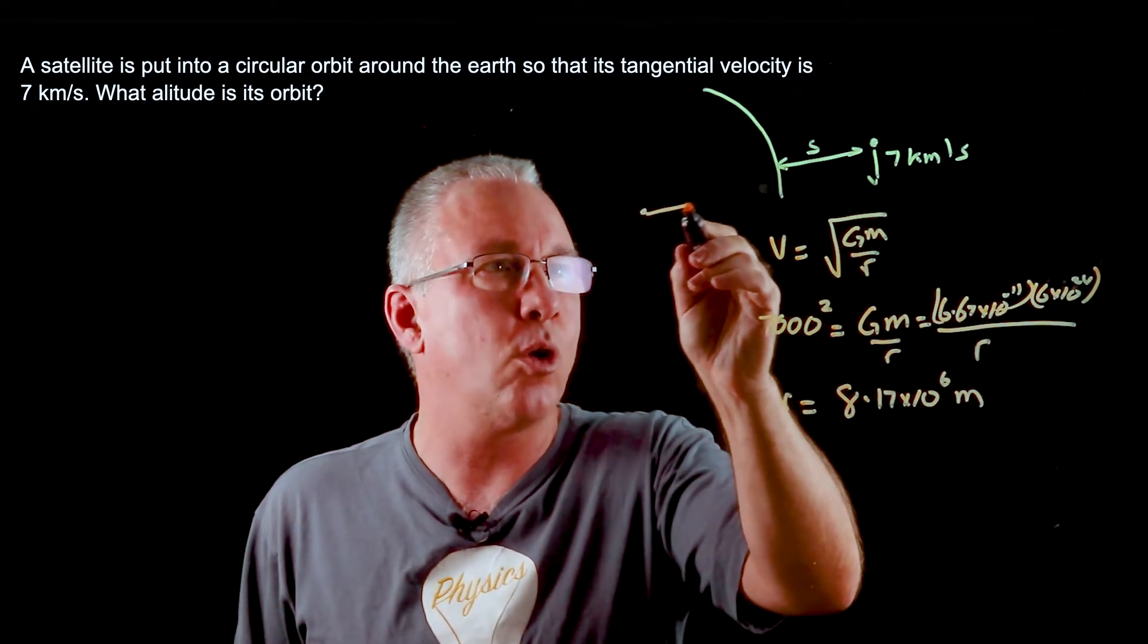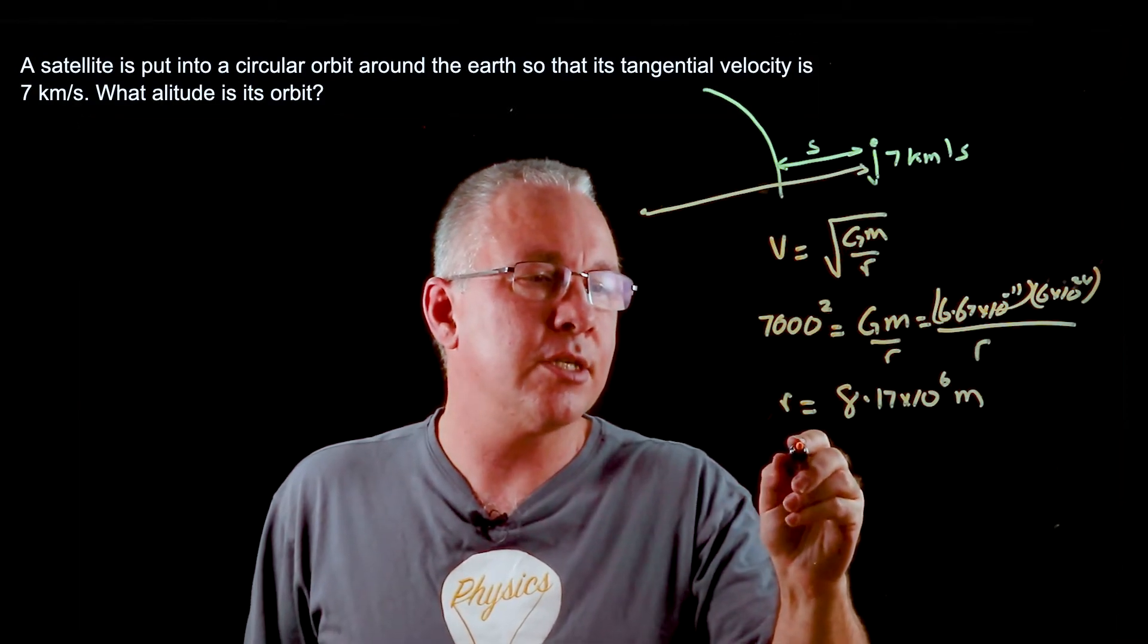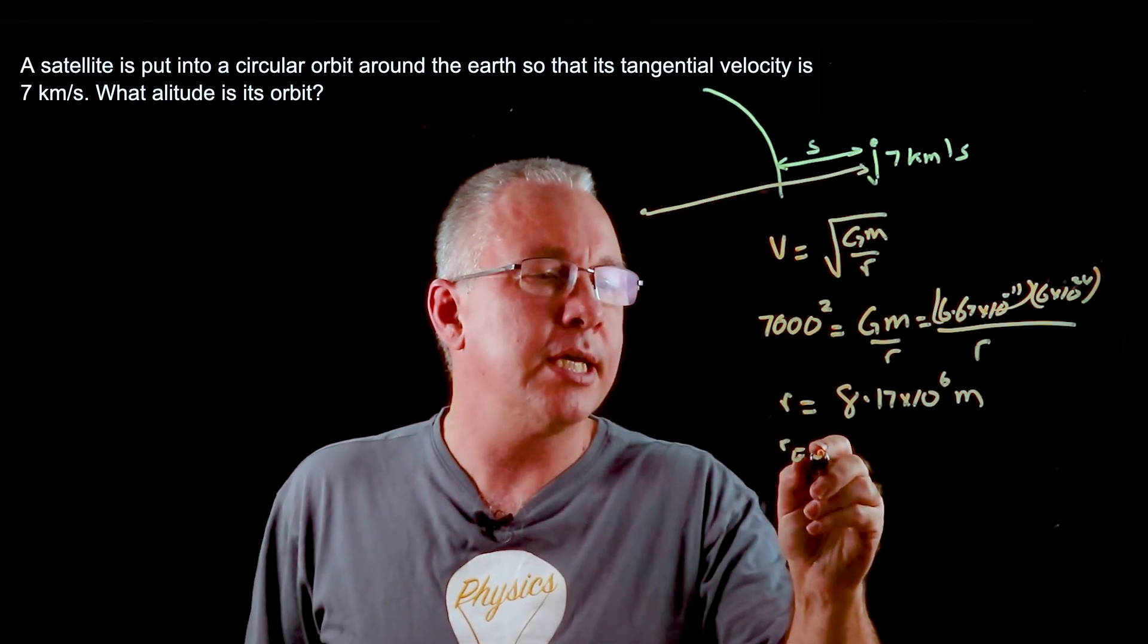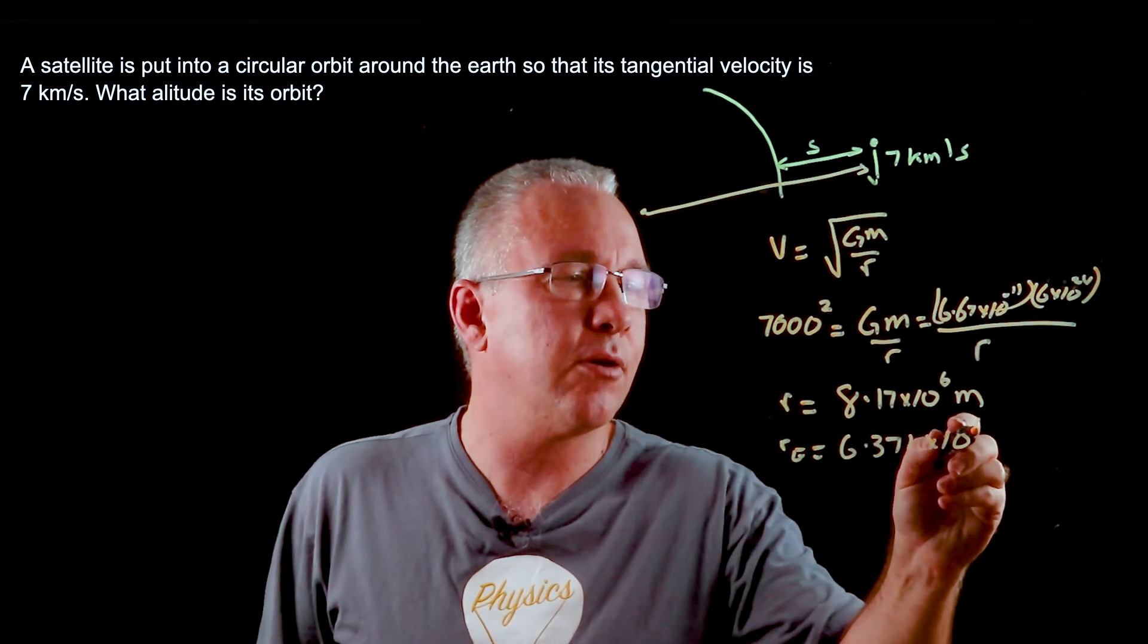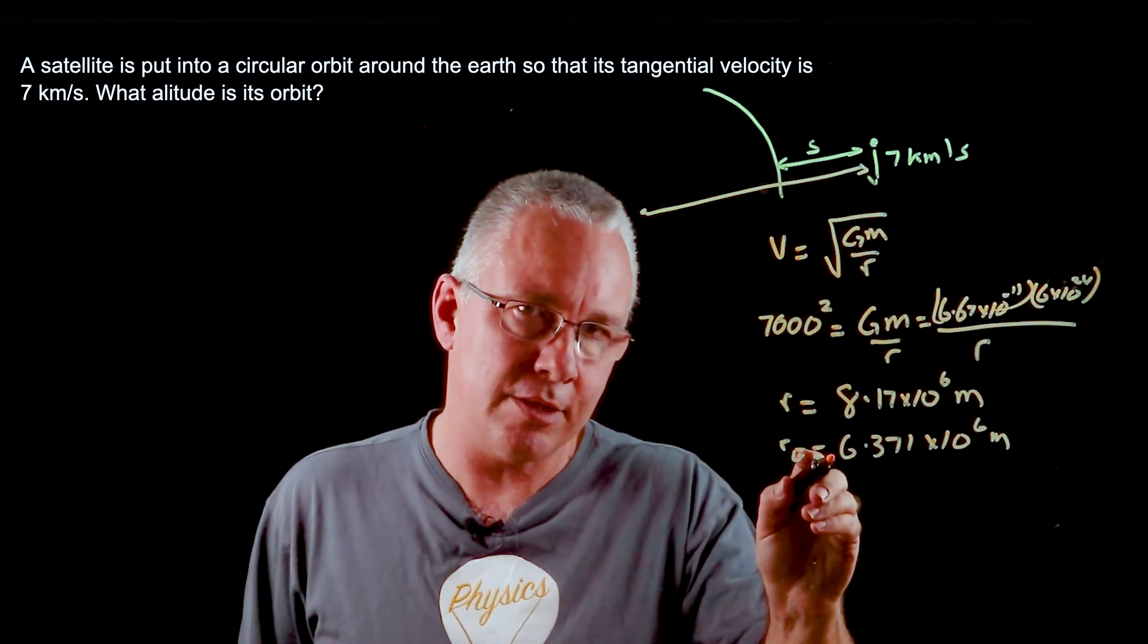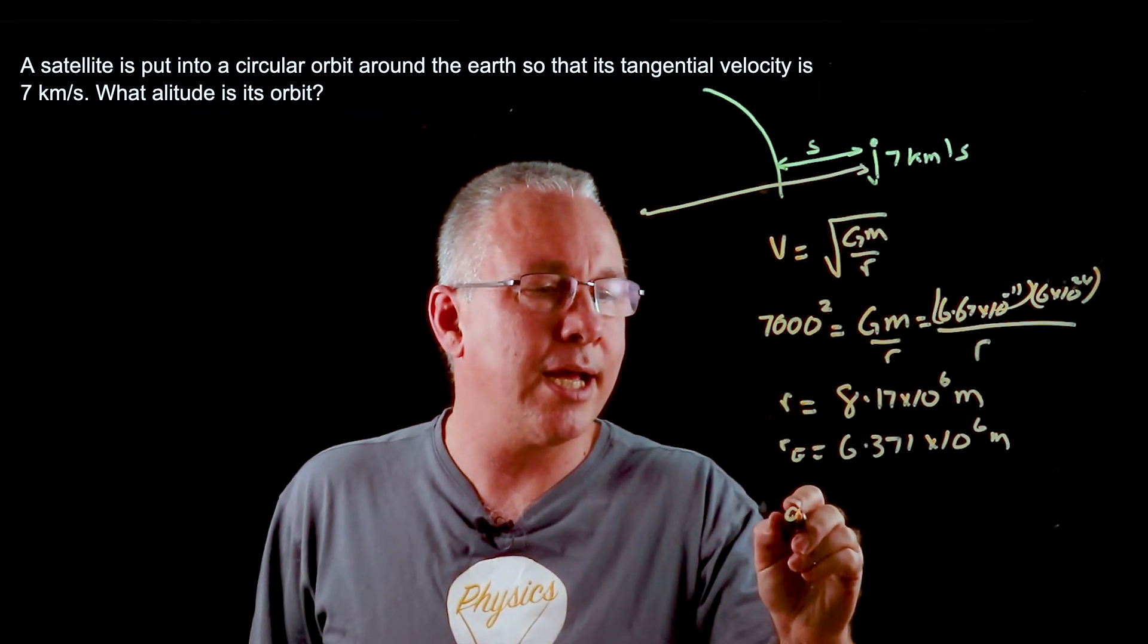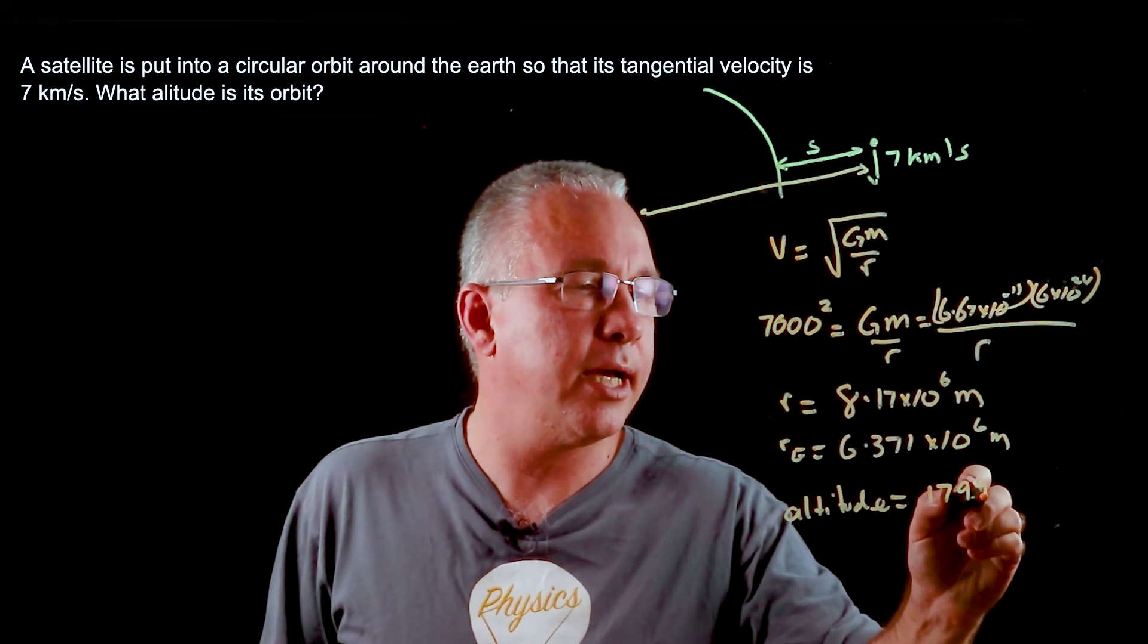if this is the center of the earth that's all that distance and we only want to have the altitude. Alright, so the radius of the earth is equal to 6.371 multiplied by 10 to the power of 6 meters. So that's the radius for the satellite, that's the radius of the earth and so therefore our altitude is going to be 1799 kilometers.